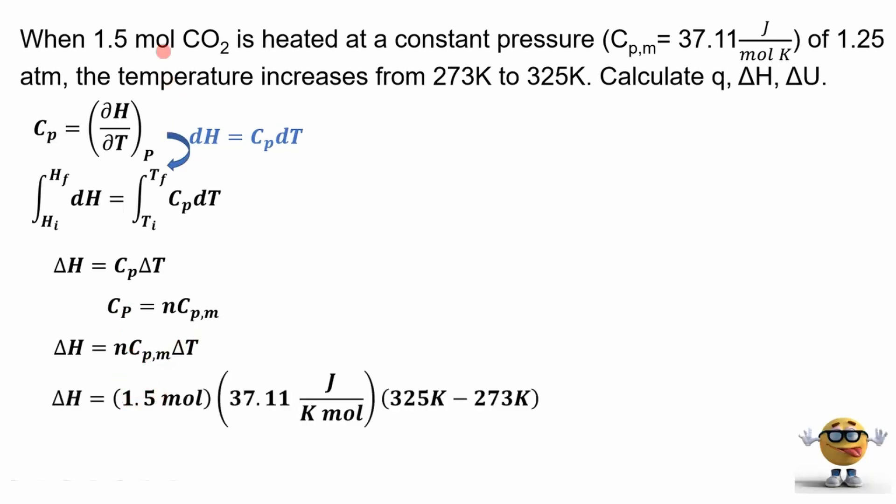We'll substitute this in here, and then we can plug in the numbers. So there's 1.5 moles of gas is what we're given. This is the molar heat capacity, so moles cancel out, and this is the temperature difference from 325, or that's the final temperature, minus 273, which is the initial temperature, gives us a change in enthalpy of plus 2,890 joules. So that's the first one.